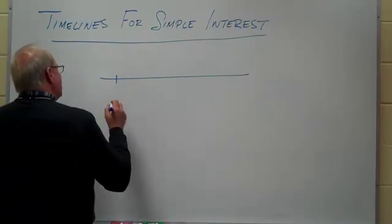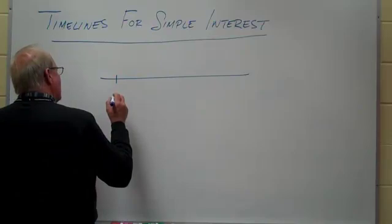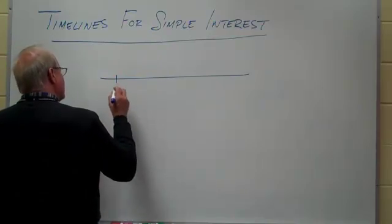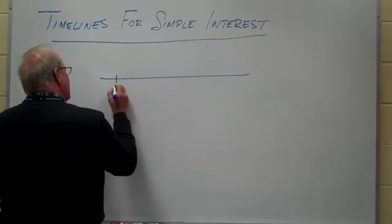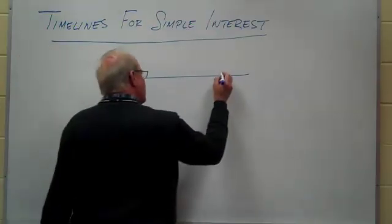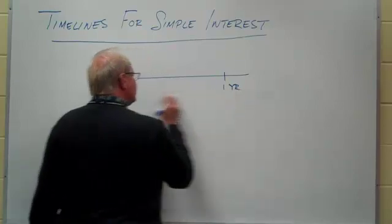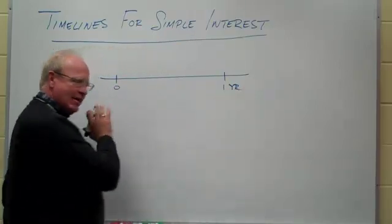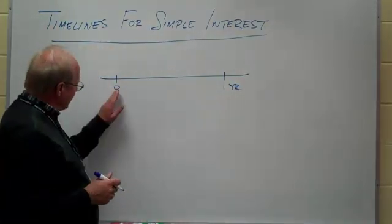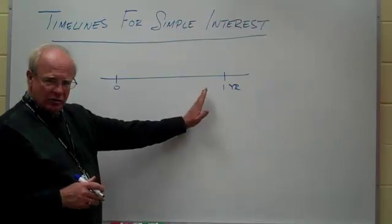And if it's now, normally we would indicate that with a zero saying this is the point at which money is starting, and then it's going up to some other point in time, let's say one year. So as we proceed to the right, time is marching on. So this is now, and this is a year from now.